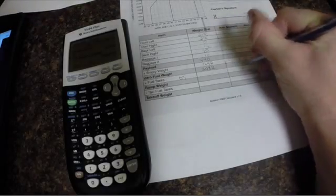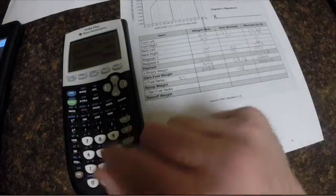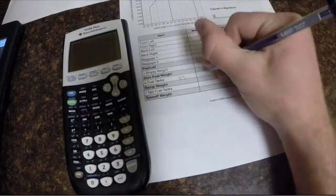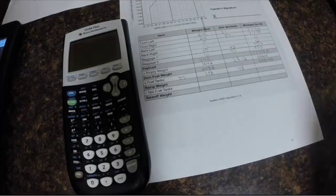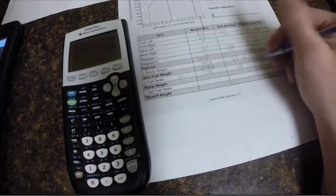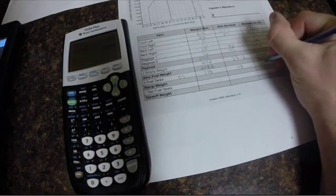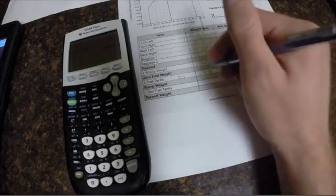So we know that that's at 48, and then the regulator for fuel is 6 pounds per gallon. So you multiply 53 times 6, which gives you 318 pounds of fuel. And like I said, the arm is 48, so you multiply 318 by 48 and that gives you a moment of 15,264.